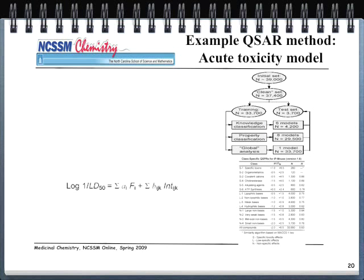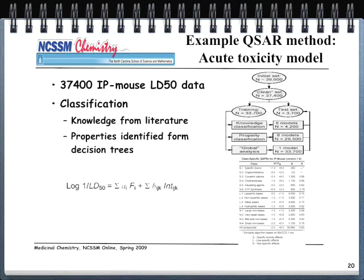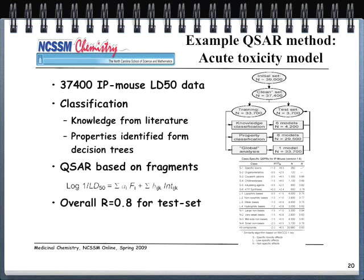Here's an example of a QSAR method from this week's lab. We take LD50 (lethal dose 50) data from mouse studies, combine it with literature knowledge, and use decision trees and QSAR methods to create a QSAR equation — in this case predicting log(1/LD50) for a compound to estimate its LD50. An R value of 0.9 or higher is typically desired, though 0.8 or higher may be acceptable depending on the drug.